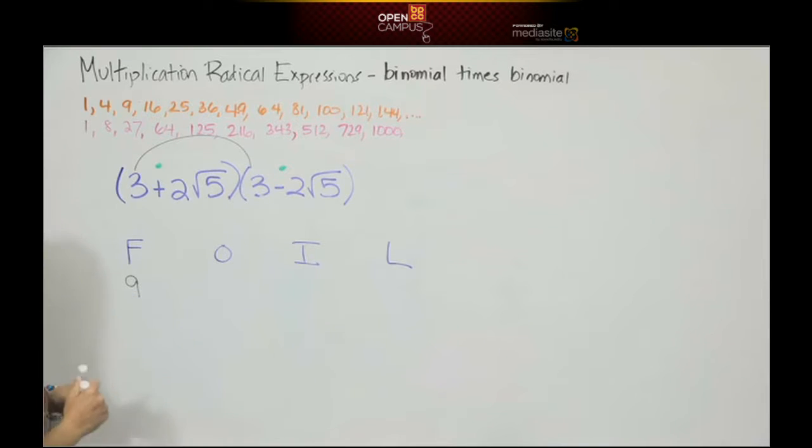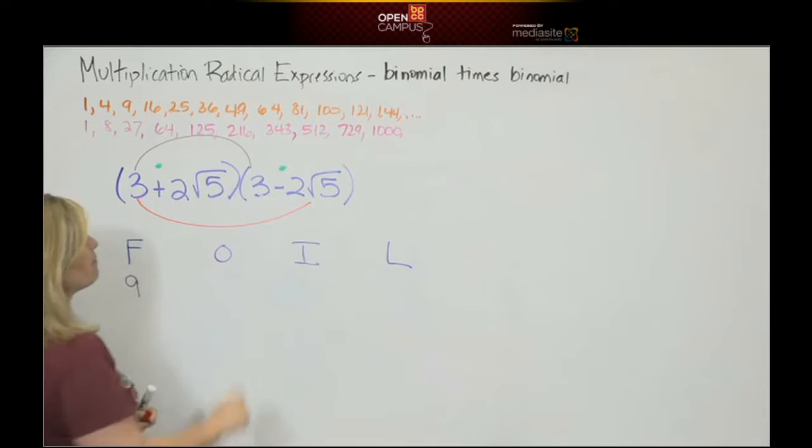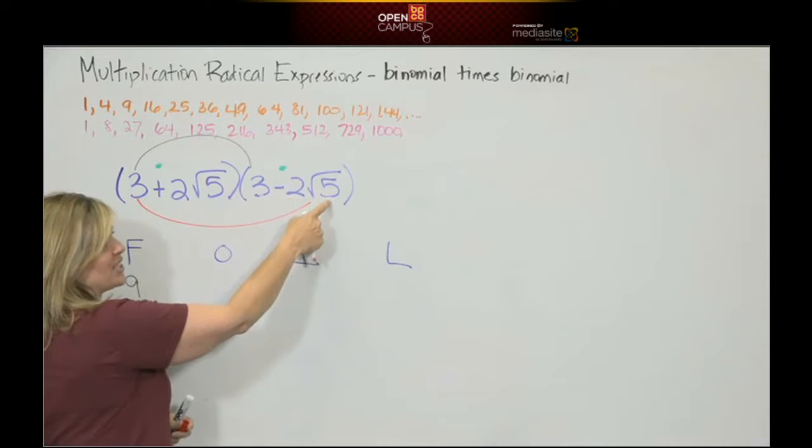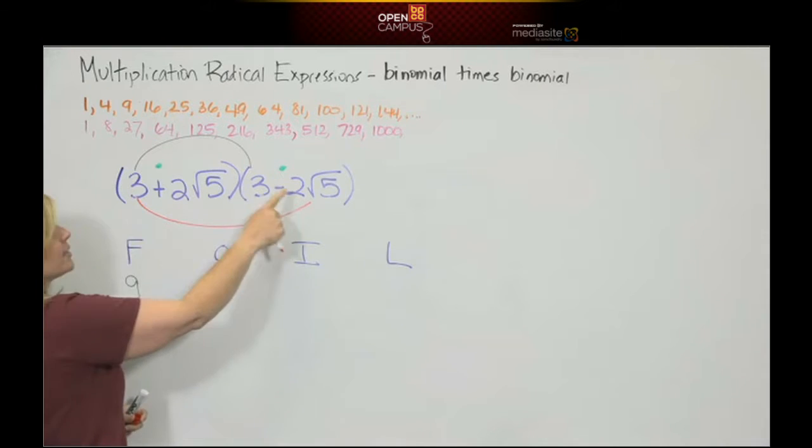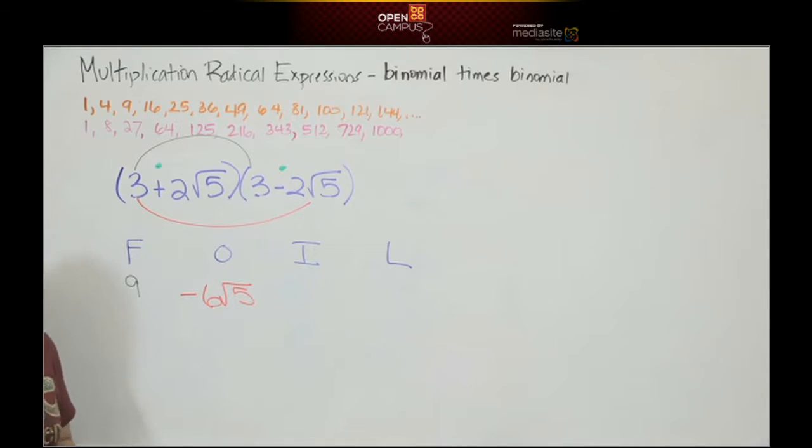Outer term is his mouth. 3 times negative 2 square root of 5. This is a whole number on the outside. This is a whole number on the outside. This is not. So 3 times negative 2 is negative 6, and then you have to write the square root of 5. You can't multiply that and make it 30.